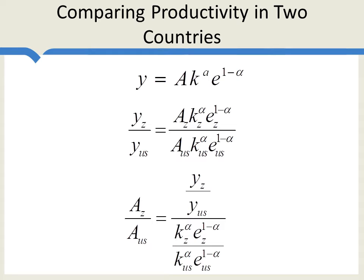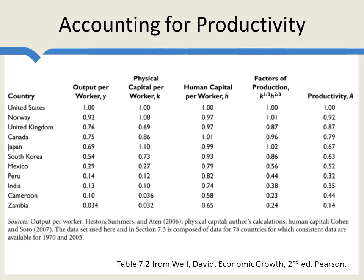Now let's look at what happens when you apply this exercise empirically to data from the world. In this table, we do some productivity accounting. This table is from David Weil's book, Economic Growth, which is a very good book. In Mexico, output per worker is 0.29 the level in the United States — about 30% of the U.S. level. Why is output per worker in Mexico so low? In part, it's because Mexico has lower physical capital per worker and lower human capital per worker. Together, the factors of production explain about half of Mexico's level of GDP per capita.